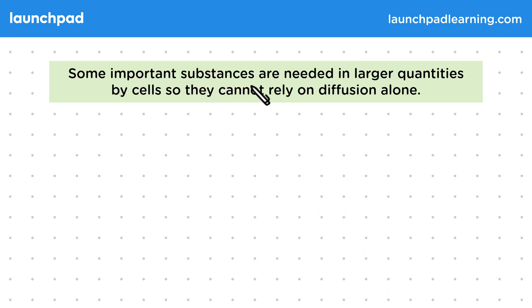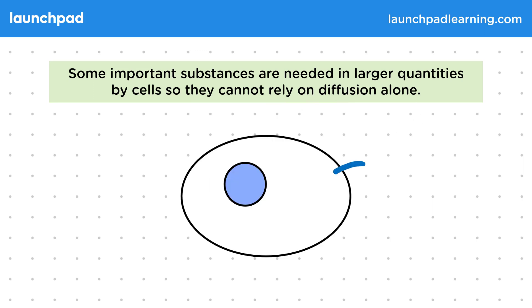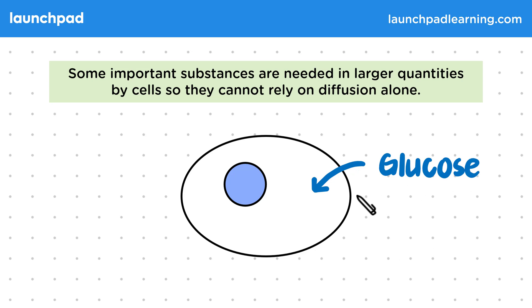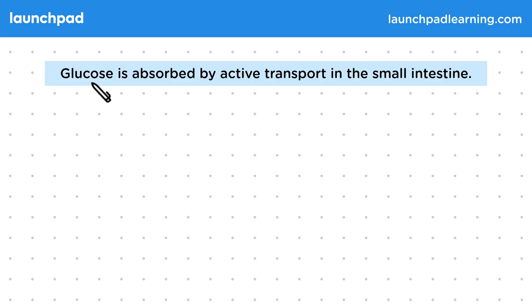Some important substances are needed in larger quantities by cells, so they cannot rely on diffusion alone. An example is glucose, needed for cell respiration — this is an example given in your specification. So where in the body would active transport of glucose be really important? Glucose is absorbed by active transport in the small intestine.